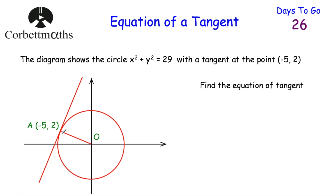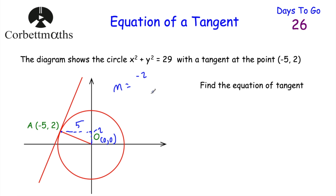To find the equation of this tangent, the radius and the tangent are perpendicular — they cross at 90 degrees. So if we find the gradient of the radius, we can take the negative reciprocal to get the gradient of the tangent. Drawing a right-angle triangle: the run is 5 across and the rise is negative 2 (going from height 2 down to 0). So the gradient of the radius is negative 2 over 5, which is negative two fifths.